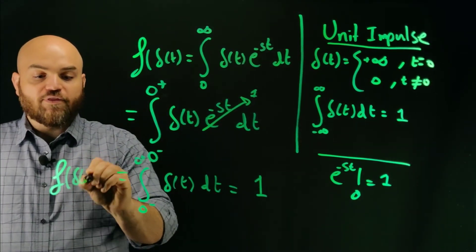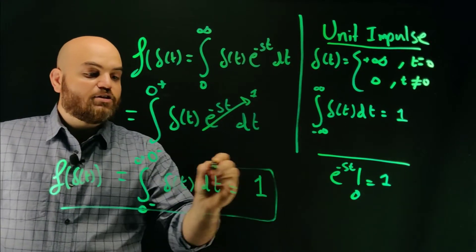And we know already, based on the definition of the delta function, that that is equal to one. So the Laplace of the delta function, or the unit impulse, is actually equal to one.